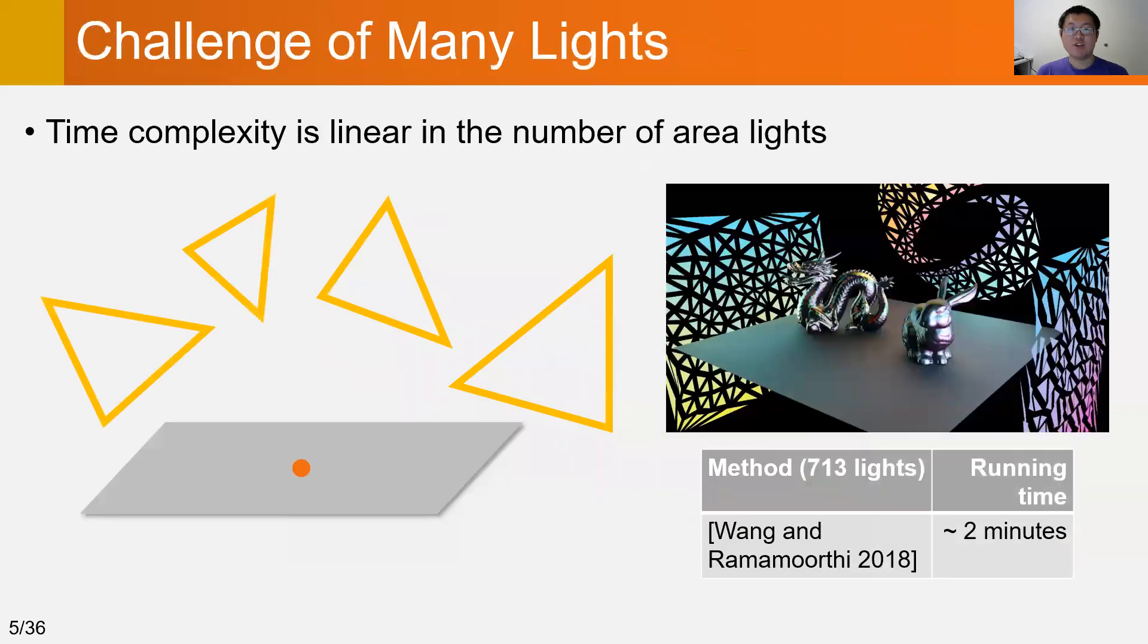A major limitation is that the time complexity is linear in the number of area lights. For each shading point, accumulating the contributions from all lights requires enumerating over all of them.